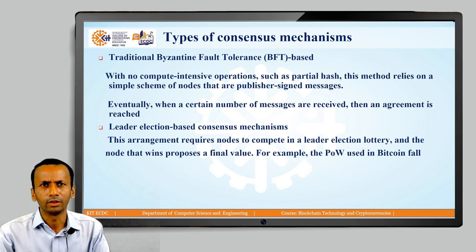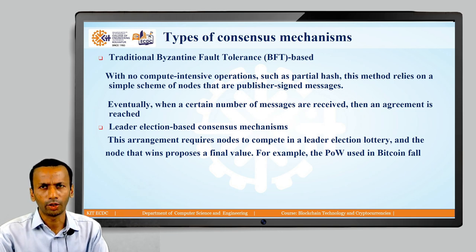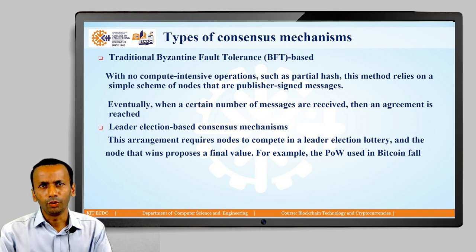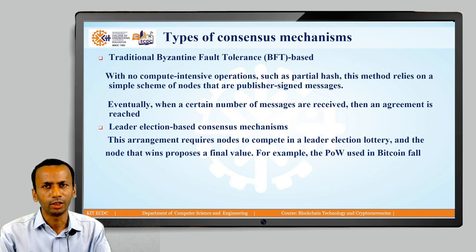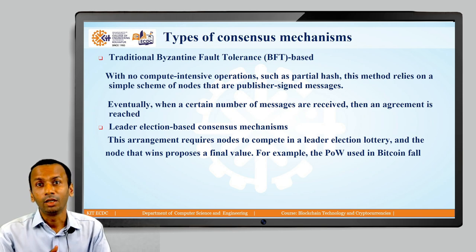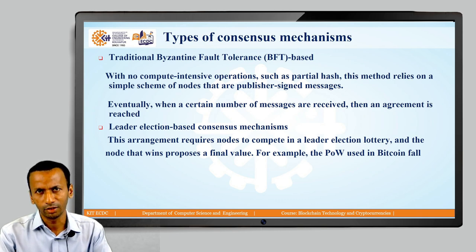There are traditionally two categories of consensus mechanisms. The first is Byzantine Fault Tolerance (BFT) — with no compute-intensive operation, this method relies on a simple scheme of nodes publishing signed messages. When a certain number of messages are received, agreement is reached. This is called the traditional Byzantine Fault Tolerance based algorithm.